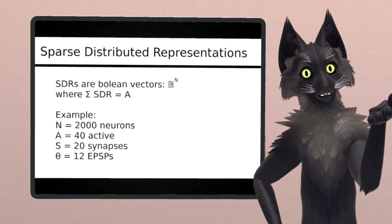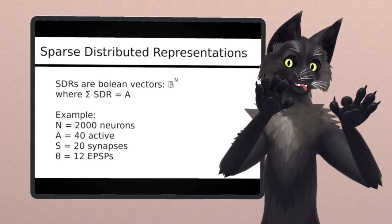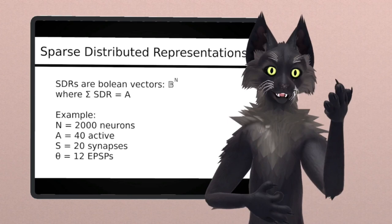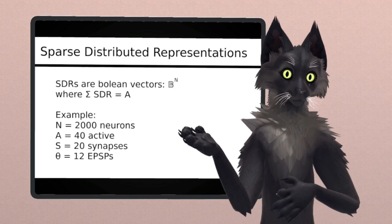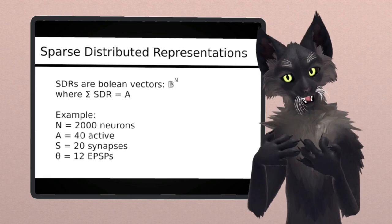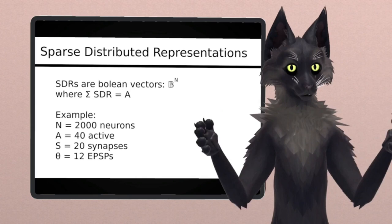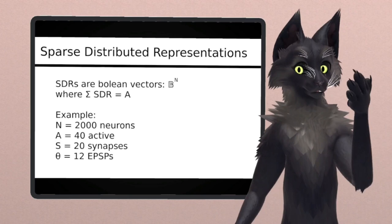A sparse distributed representation, or SDR for short, is a vector of boolean values. This is a list of ones and zeros. Each value in the vector is supposed to represent a neuron. If the neuron emitted an action potential, then it's represented by a one, and if the neuron was silent, then it's represented by a value of zero. At every moment in time, your brain is generating a new SDR to represent its current activity. Right now, your visual cortex is outputting an SDR, and it represents the objects that you're currently looking at.